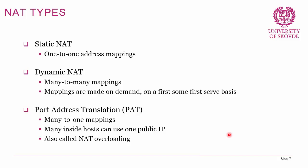Dynamic NAT uses many-to-many mappings based on demand. We configure an inside network and a pool of available public addresses, and mappings are made dynamically. If we have three public addresses, three private devices can communicate with the internet simultaneously; if the pool is exhausted, no further devices can communicate. Port Address Translation, or PAT, is a many-to-one mapping allowing many hosts to share one public IP address — also called NAT overloading.